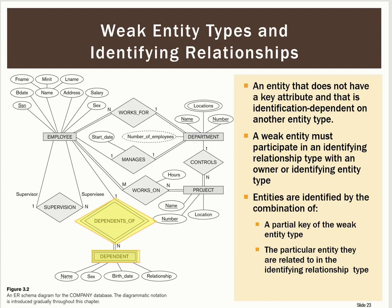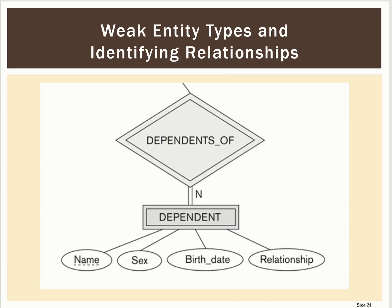What does that mean? If we look at the attributes of dependent, we will see name, sex, birth date, and relationship. These attributes alone are probably insufficient to uniquely identify an entity in the dependent table.